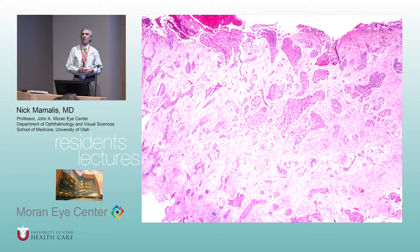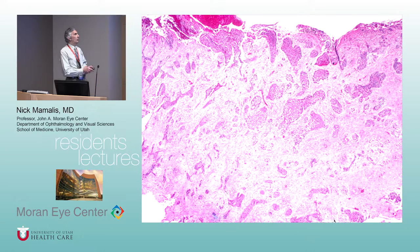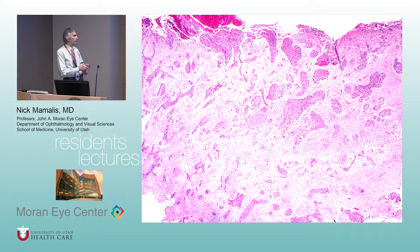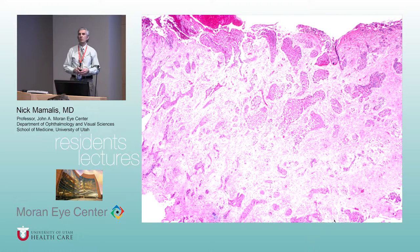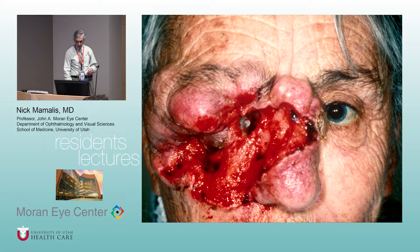The one you need to worry about is morpheaform basal cell — it has little tiny fingers of tumor cells with a desmoplastic reaction, a proliferation of connective tissue, which makes these tough to remove because they can sneak out underneath. The surgery you want for morpheaform is Mohs. Basal cells are essentially benign tumors except when you let them grow for 10 years.